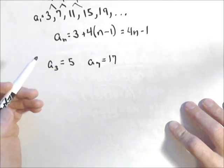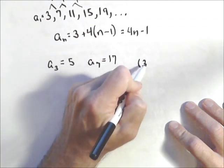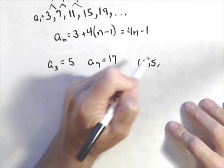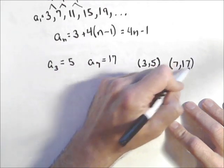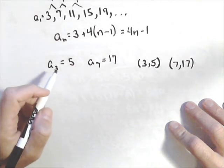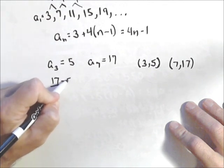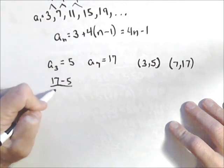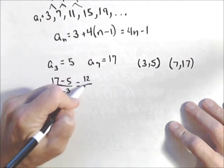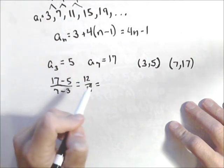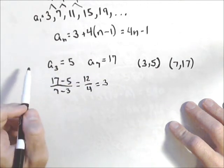We can treat this like a linear function. We can actually kind of think of these as points, 3 and 5, and 7 and 17. This common difference that I'm talking about is really just slope. So we can do 17 minus 5 over 7 minus 3, which is 12 over 4, or 3. So we have a common difference of 3, that means it goes up 3 each time, or down 3 each time.